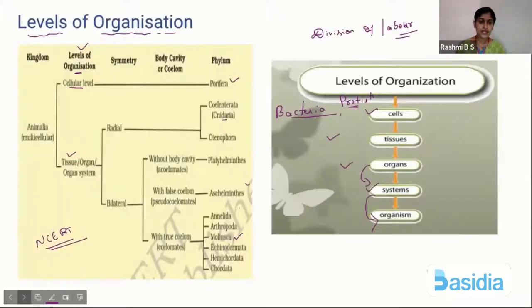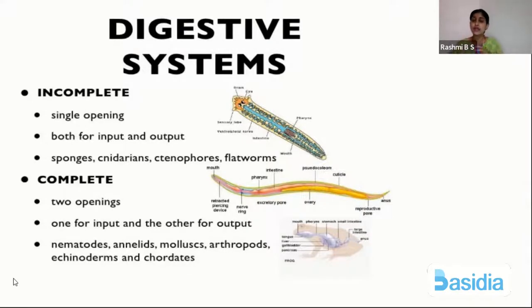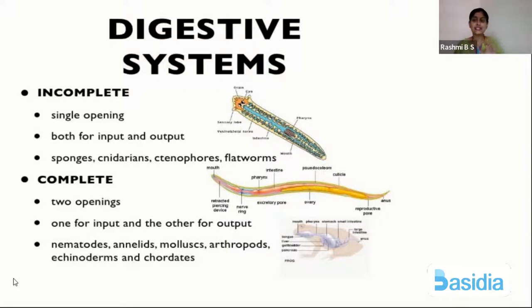Along with the criteria, I'll be introducing you to some keywords that you frequently come across in the animal kingdom chapter. If you understand what these terms mean, you'll find it easy when we discuss the phylums. First, let's take up digestive system. In digestive system, we mainly have two types: incomplete digestive system and complete digestive system.